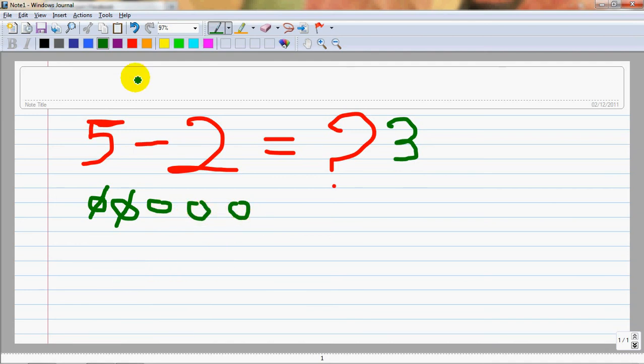There is one more way of doing it. Let me show you that way also. It's called the number line. Say, this is a number line which we have.